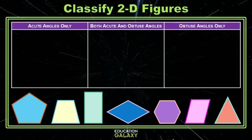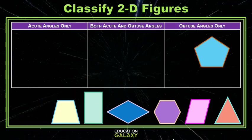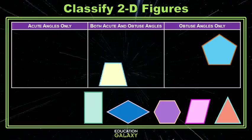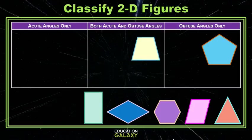So in this first image, the pentagon, it appears that I have all obtuse angles. Those all look larger than a right angle to me. We're going to put that in the obtuse angle section. The trapezoid, the next figure, appears to have two obtuse angles on top and two acute angles on bottom. I'm going to put that in the center section there.